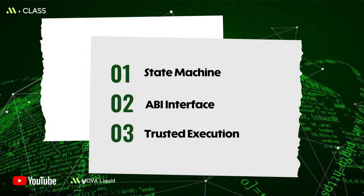Third, trusted execution and security boundaries. Consensus ensures that every node gets the same result from the same inputs, but contracts can still be attacked due to permission issues, re-entrancy, or overflows. That's why coding standards and audits are essential.